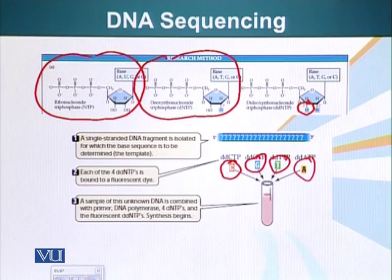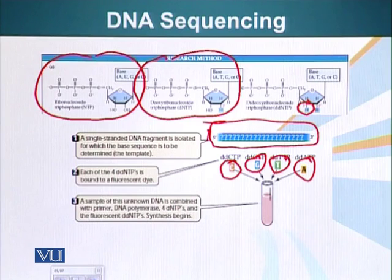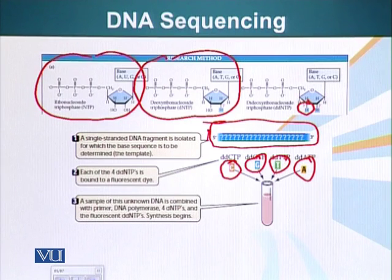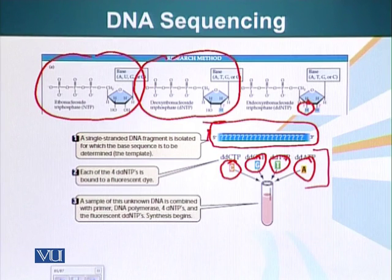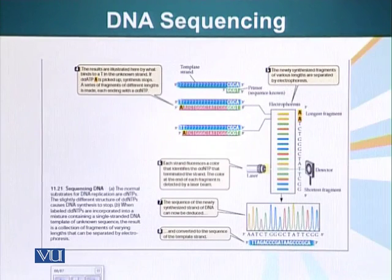So we run our PCR reaction — we have the template DNA whose sequence we want to determine. We have a primer, and we need a little bit of sequence information to design that primer. The rest of the sequence we need to determine. We add the normal PCR components — nucleotides and enzymes — and additionally, we add these special di-deoxyribonucleosides with their fluorescent molecules in a very small quantity compared to the normal nucleotides.